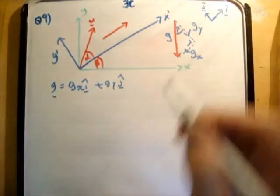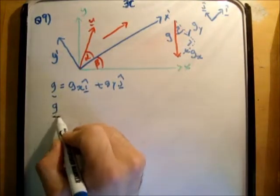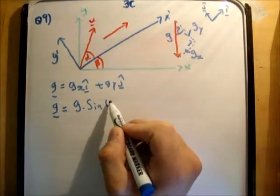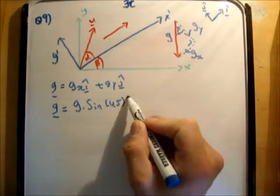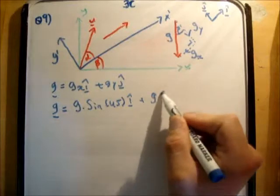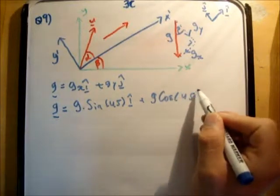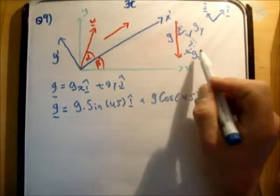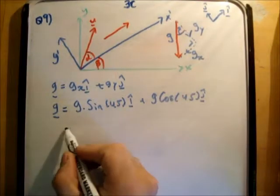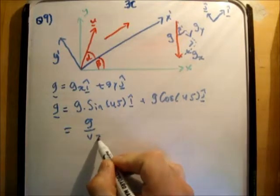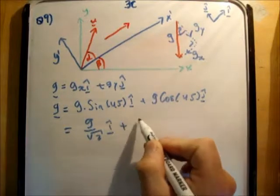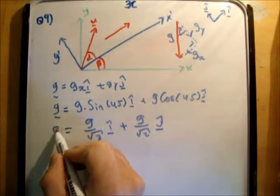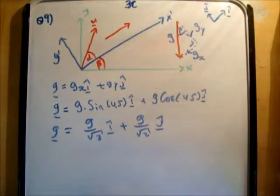So we get g is equal to g times the sine of 45 i hat plus g times the cos of 45 j hat. Because g sub x is opposite the angle beta, so that's sine. So we get g over root 2 i hat plus g over root 2 j hat. Because the sine and cosine of 45 degrees are the same.